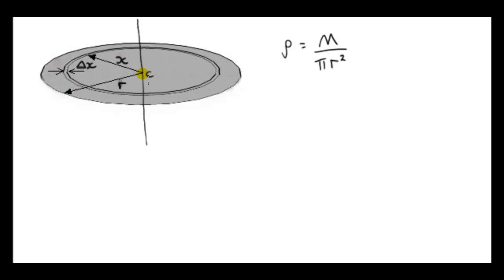The center of mass of a uniform disc is at the center of the disc. We want the moment of inertia about an axis that's perpendicular to the surface of the disc and passing through the center of mass. We break the disc up into mass elements, delta m. We choose these mass elements to be concentric rings centered at the center of the disc. We can make those mass elements as small as we like by making the thickness of each ring as small as we like.